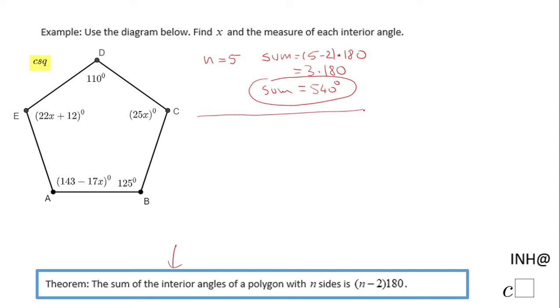And now we can go to the next stage. We're going to say the measure of angle A plus the measure of angle B plus the measure of angle C plus the measure of angle D plus the measure of angle E, those five interior angles of this polygon, is 540 degrees.